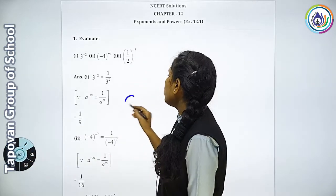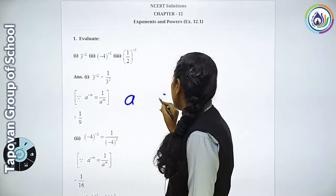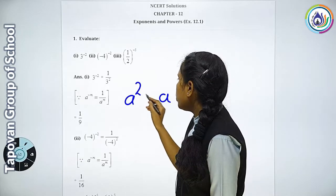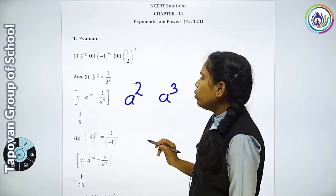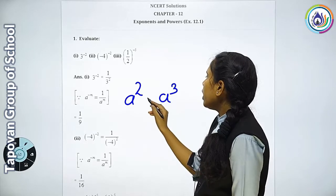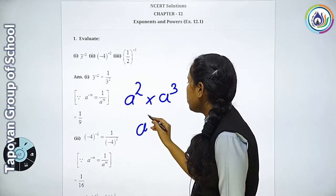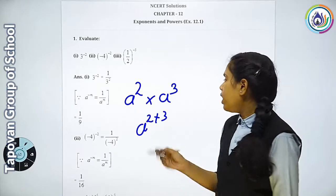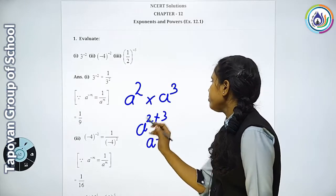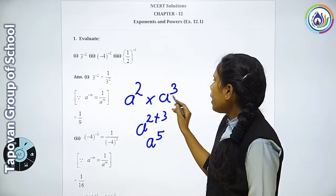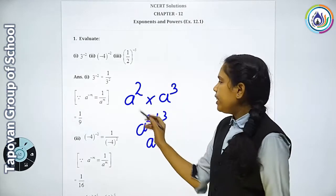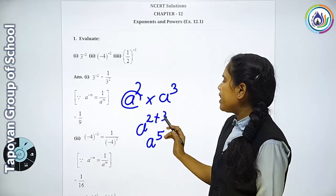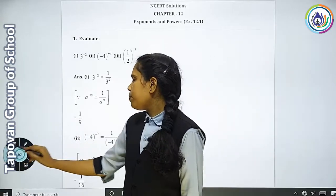Phir agar aapki donho value same hai — yahan bhi a hai, yahan bhi a hai — yahan power 2 hai, yahan power 3 hai. To aap kya karoge? Agar multiply hai, to kya karoge? Aap iska plus kar do: 2 plus 3, kitna hoga? 5. Agar aapki power — niche ka exponent same hai, power alag-alag hai — multiply ki sign use kar sakti hai.